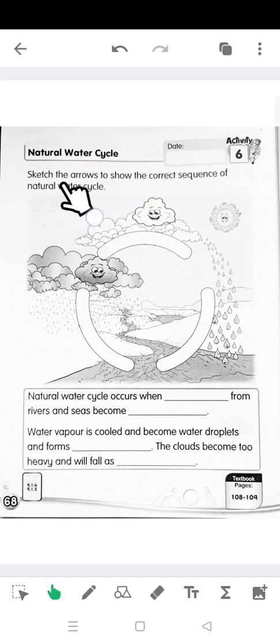Sketch the arrows to show the correct sequence of natural water cycle. We are going to draw the arrow, but which way is the arrow will be?